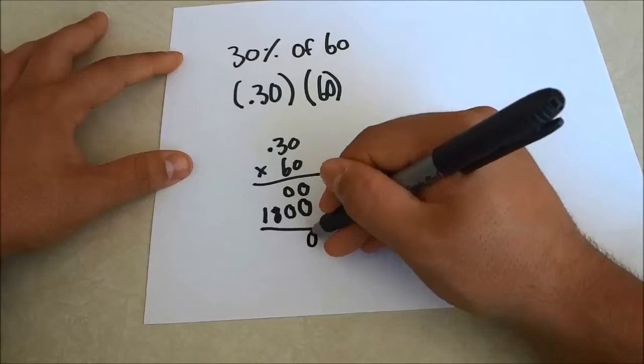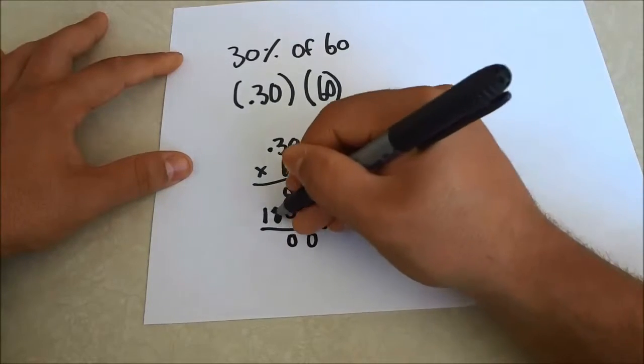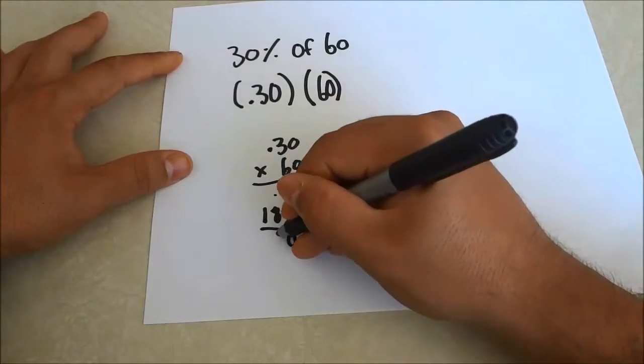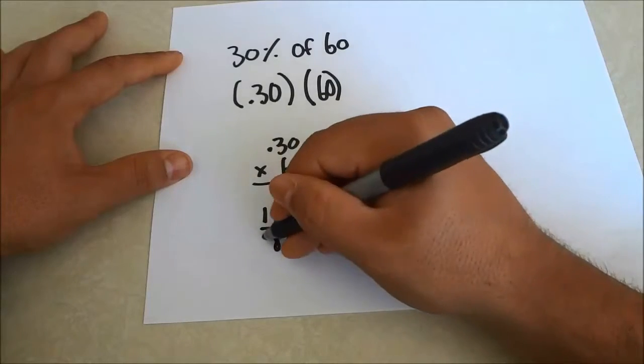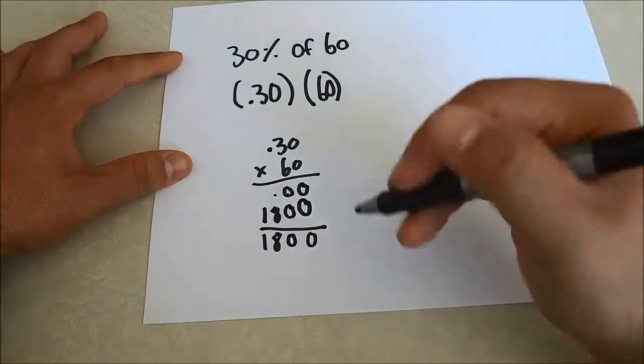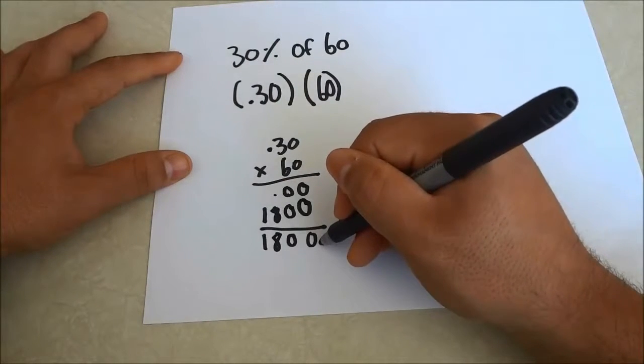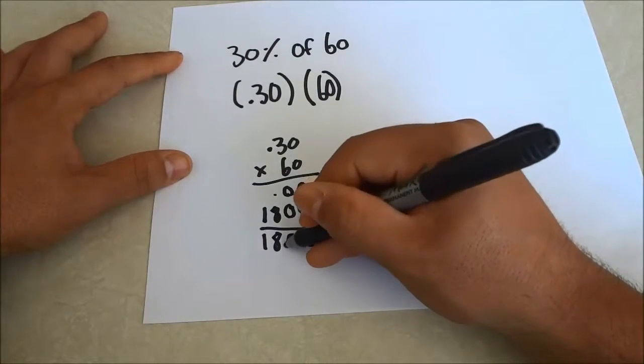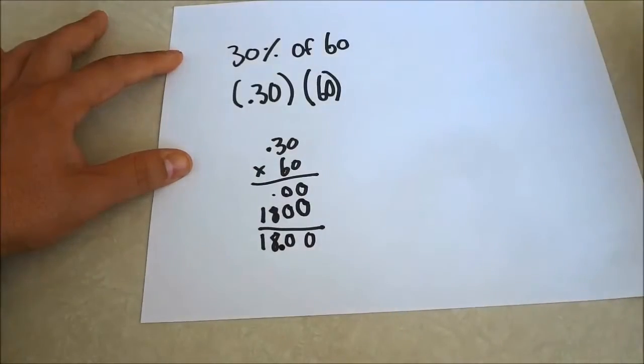0 plus 0 is 0. 8 plus 0 is 8, and 1 plus 0 is 1. And because our decimal was two spaces to the left over here, I'm going to take the decimal and move it two spaces to the left over here. 1, 2. Just like that.